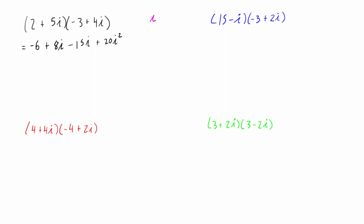Now if you remember i squared, we have the definition of i is equal to the square root of negative 1. So that means that i squared is going to be equal to negative 1. So we can substitute this back into our expression here. We can simplify it a little bit. We have negative 6, 8i minus 15i is negative 7i.